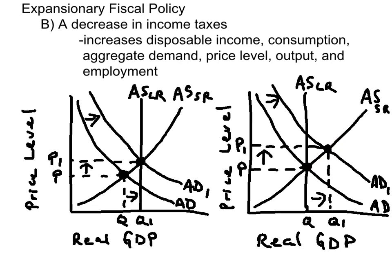Another tool of an expansionary fiscal policy is a decrease in income taxes. If the government cuts personal income taxes, that will raise disposable income, which is income that could be spent or saved, which will increase consumption and shift aggregate demand to the right.